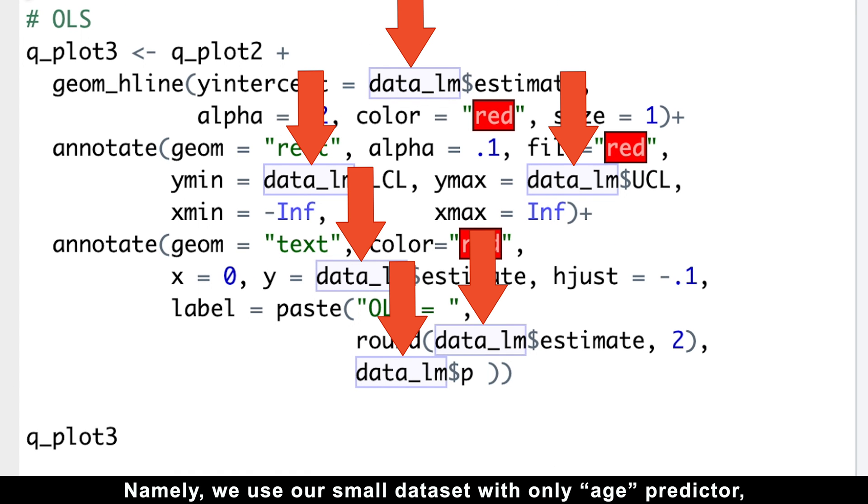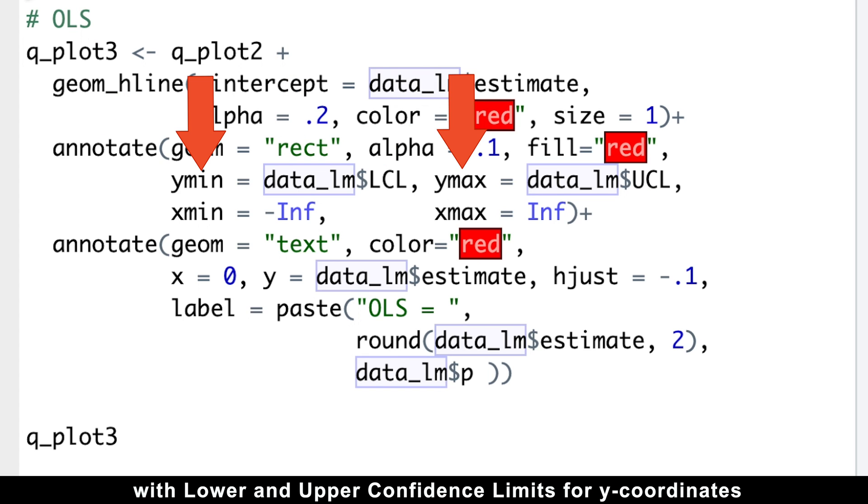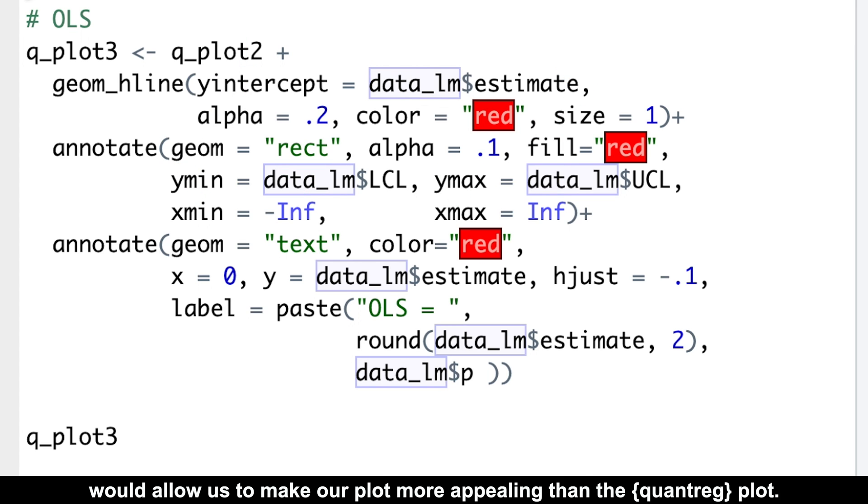And that's what we do next. Namely, we use our small dataset with only age predictor. And first, we use the estimate as a line. Then, we use the annotate function to create a rectangle with lower and upper confidence limits for y-coordinates and infinity for x-coordinates. The opacity, color, and size of our lines would allow us to make our plot more appealing than the quantreg plot.